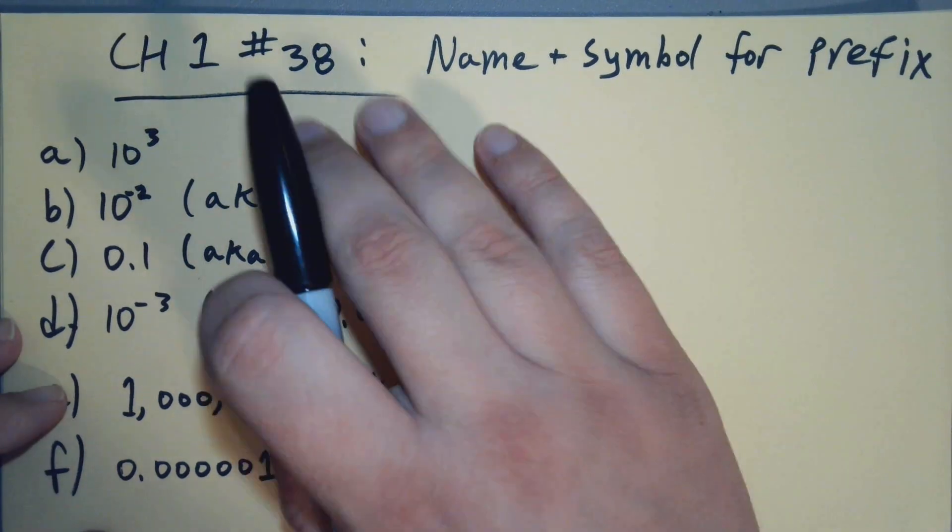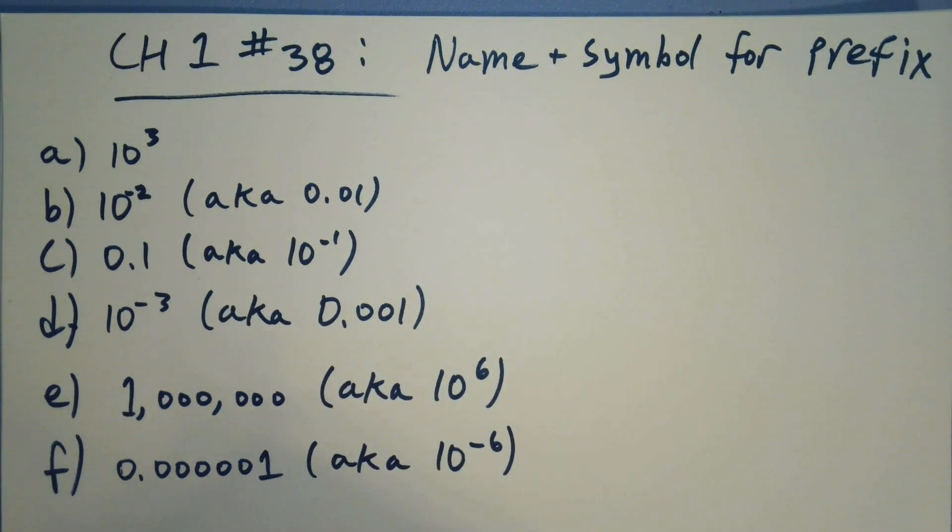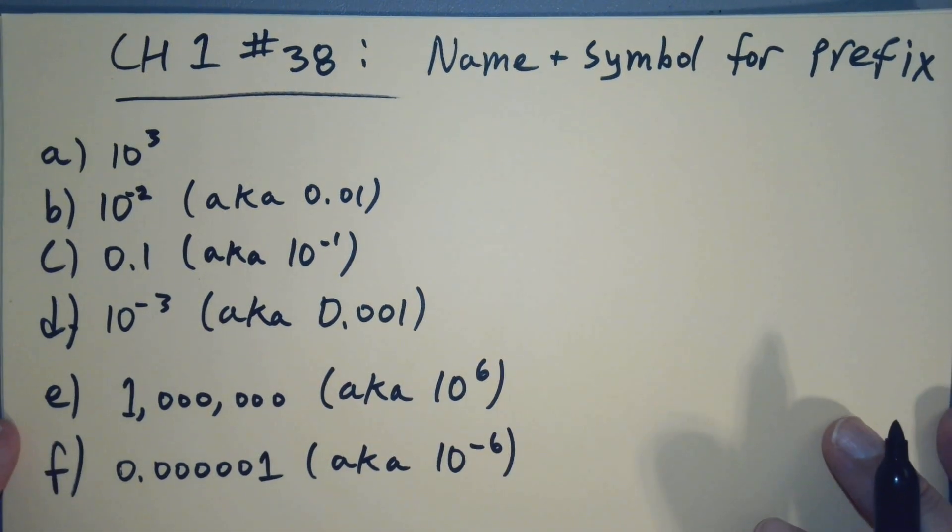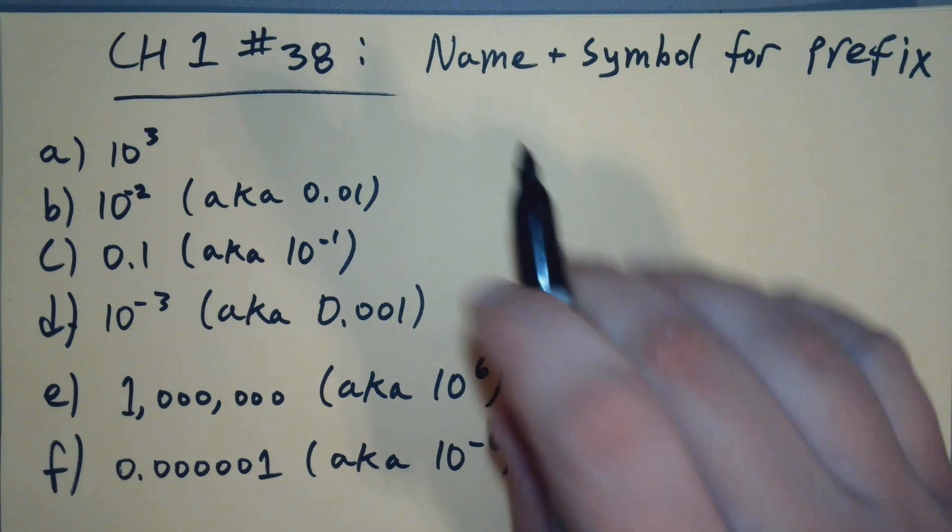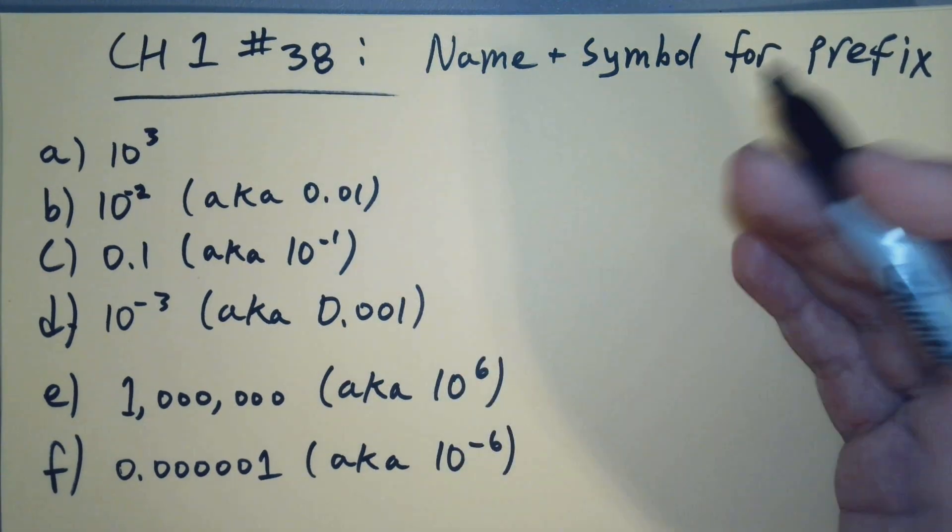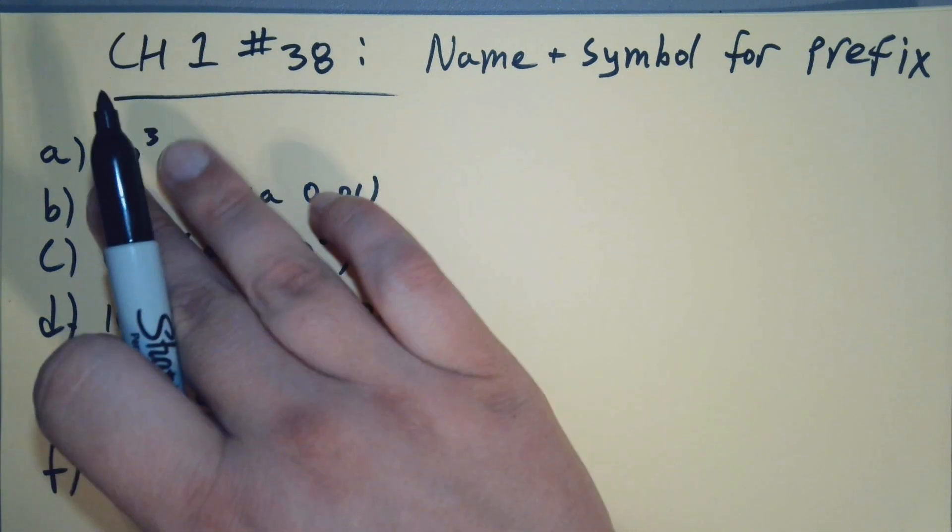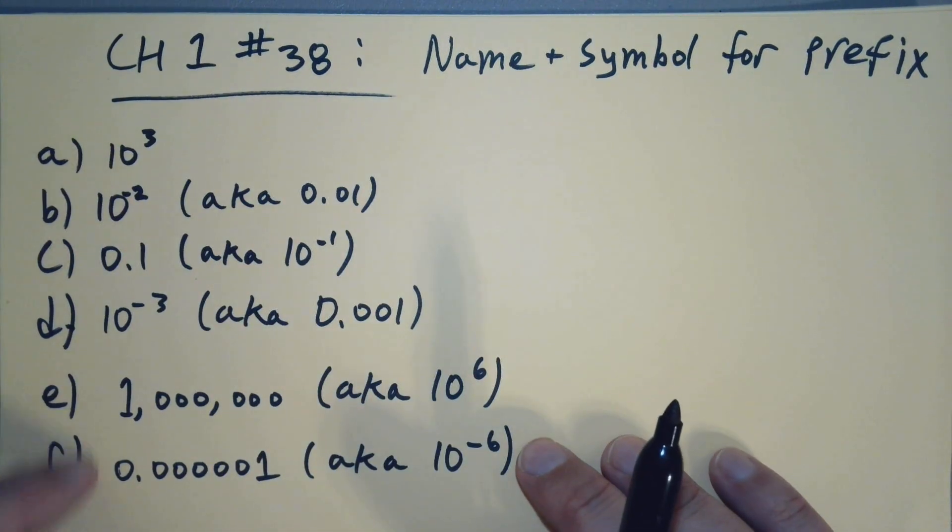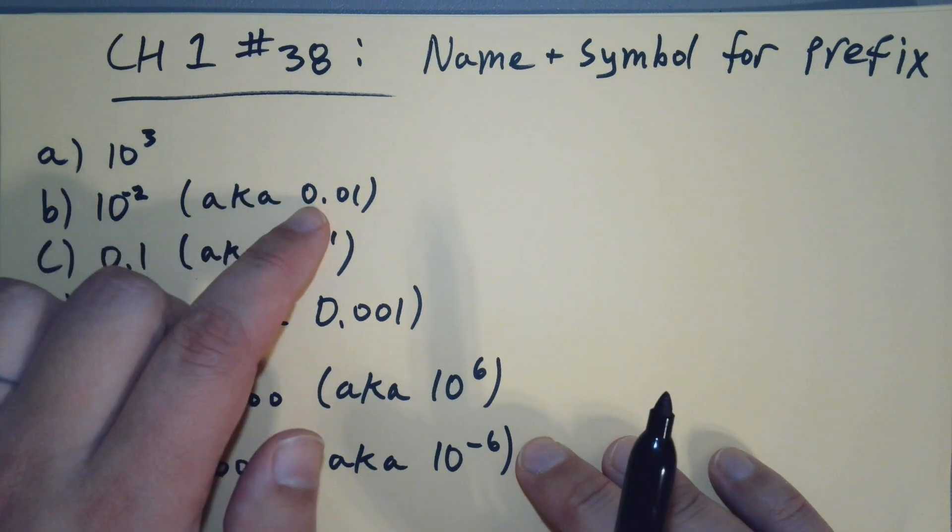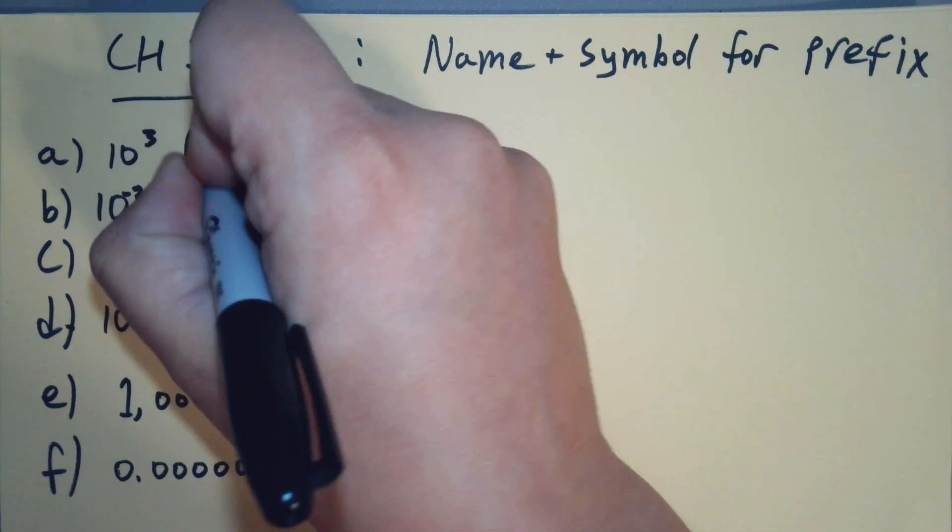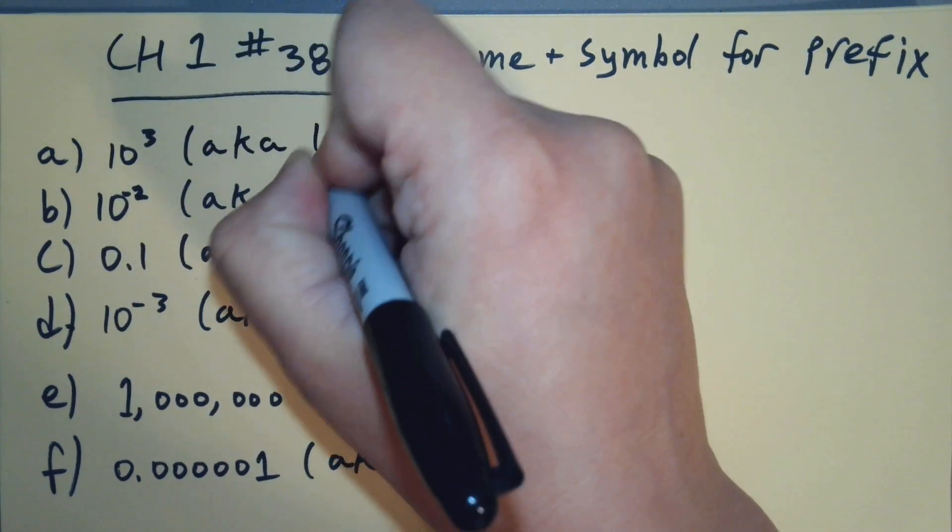Okay, so let's talk about number 38 here in Chapter 1. By popular demand, number 38 has been requested. In this problem you're supposed to work within the metric system. You're supposed to give the name and the symbol for the prefix for the number given. These were the numbers as provided in the problem, and I've translated either from powers of 10 to decimal or back again to help you see.